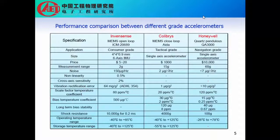Here we list a detailed performance comparison between different grade accelerometers. As we can see, when these accelerometers have better performance, their selling price could be increased by more than 10 times. Comparing MEMS accelerometers and coarse-pendular accelerometers, MEMS accelerometers could have a better scale factor temperature coefficient, but worse bias temperature coefficient and long-term bias stability. So the main challenge really relies on the bias temperature coefficient and the long-term bias stability.